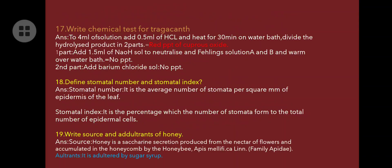Chemical test for Fehling's/Trucard test: to 4 ml of solution add 0.5 ml of HCl and heat for 30 minutes. Divide the hydrolyzed product into two parts when a red precipitate of cuprous oxide appears. First part: add 1.5 ml sodium hydroxide and Fehling's solution A and B, warm — no precipitate. Second part: add barium chloride — no precipitate. This confirms the presence of the Trucard glycoside.